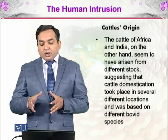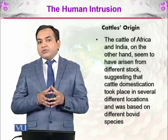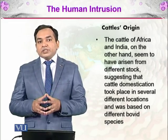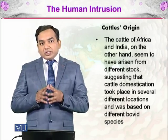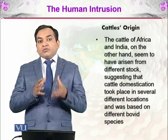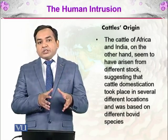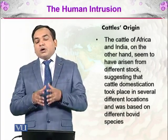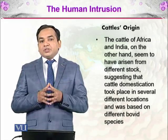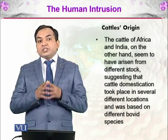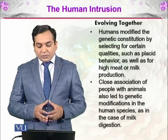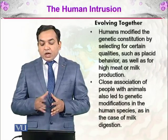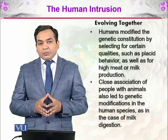The cattle of Africa and India seem to have arisen from different stock, suggesting that cattle domestication took place in several different locations based on different ancestral bovid species. Even though aurochs were present in Europe, the Bos taurus of the Middle East is the ancestor of European cattle today. All cattle species — whether in India, Europe, or Pakistan — are very distinct from each other.